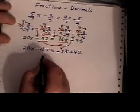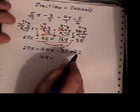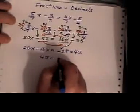Okay, 20x take away 16x is 4x. Minus 35 plus 42 works out to 7.